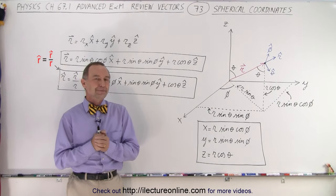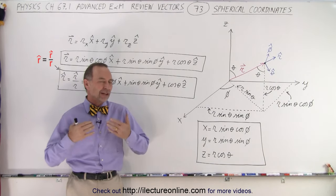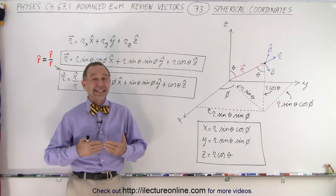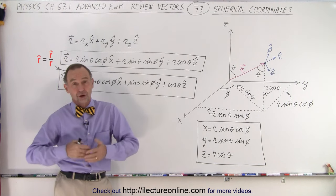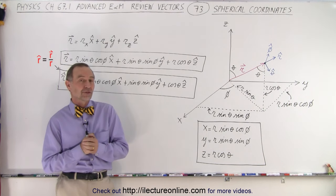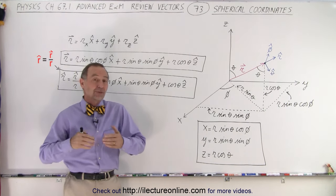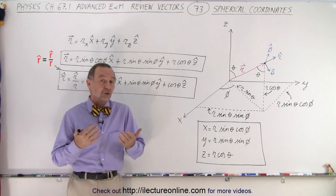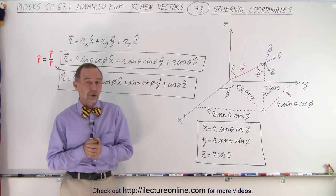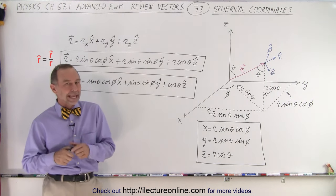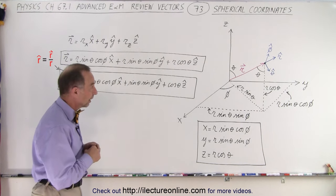Welcome to ElectronLine. We've seen vector notation in the x, y, and z coordinates — the Cartesian coordinate system — but it sometimes makes more sense to use spherical or cylindrical coordinates. So here we're going to start by looking at spherical coordinates.